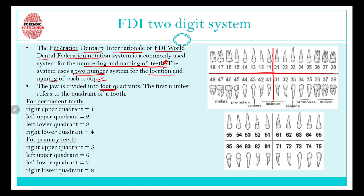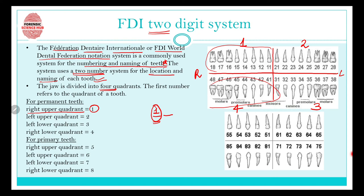The jaw is divided into four quadrants. The first number refers to the quadrant where the tooth is located. The upper right quadrant is the first quadrant, upper left is the second, lower left is the third, and lower right is the fourth. So for all teeth in the upper right quadrant, the first digit is always 1; for lower right it is 4; for upper left it is 2; and for lower left it is 3.